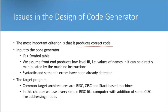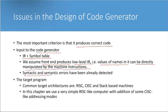Issues in the design of a code generator: the most important criteria is that it produces correct code. The input to code generation is the intermediate representation of the code and the symbol table. We assume the front end produces low-level intermediate code — where values and names can be directly manipulated by machine instructions. Static and semantic errors have already been detected during previous phases.